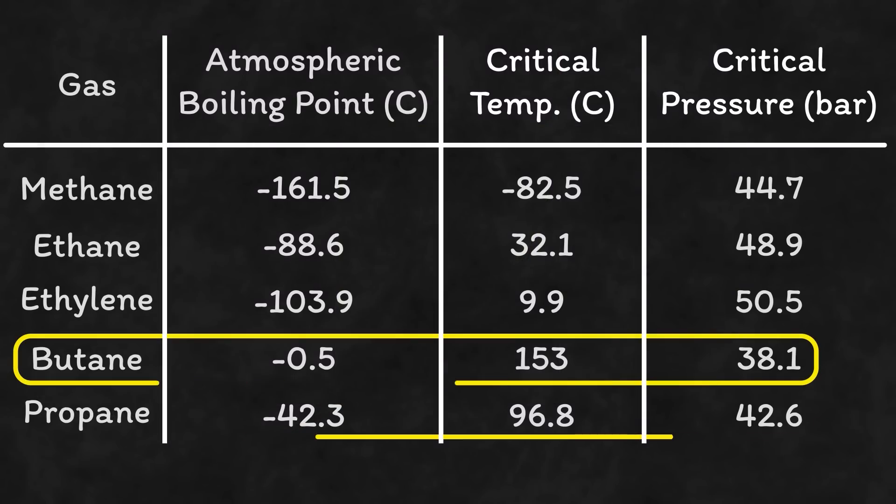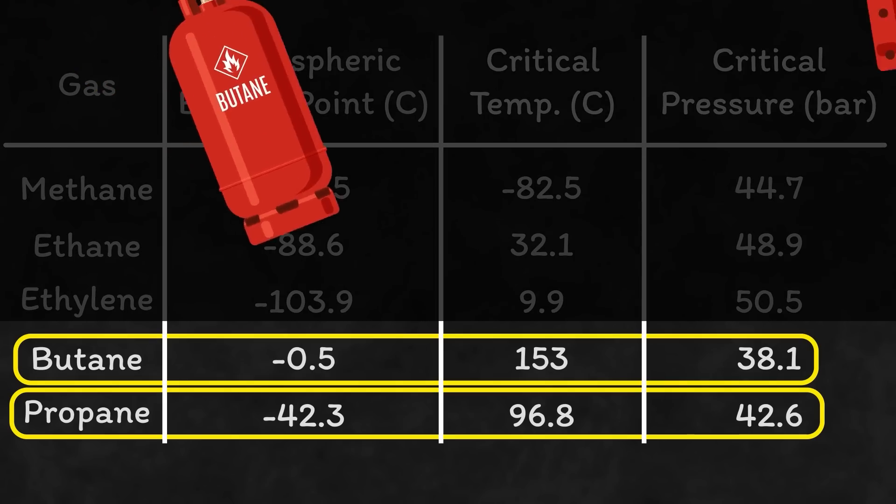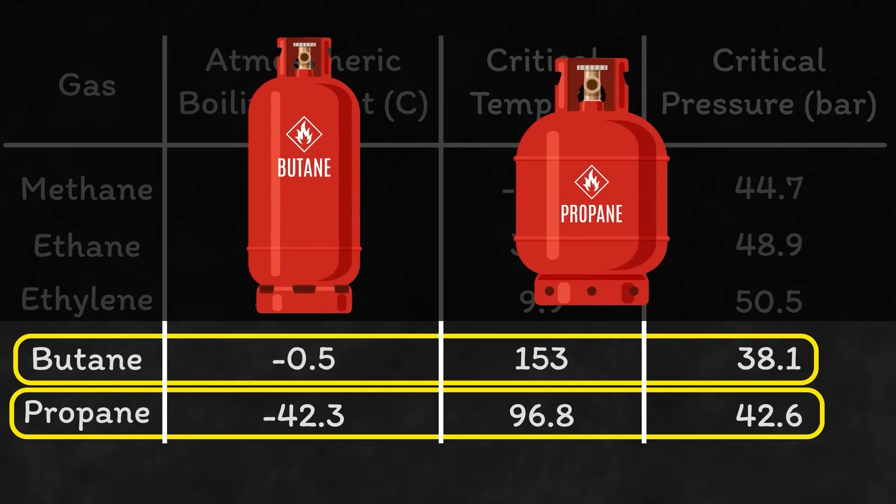For example notice how butane and propane have critical temperatures much higher than normal air temperatures. This means that they can be transported using pressurization alone which is why you can buy them in gas canisters from normal shops.